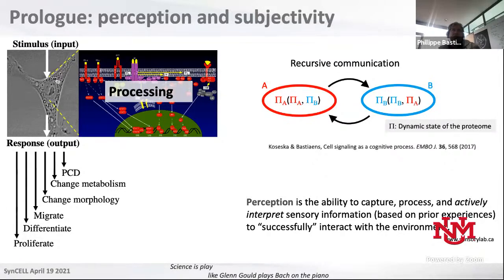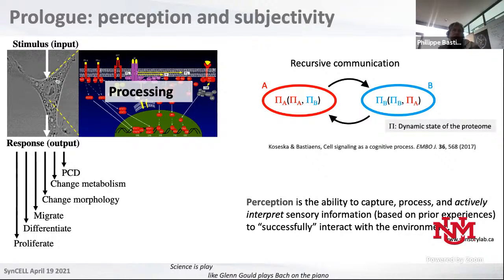I would like to give a different twist on that: the idea of recursive communication, where the system represents a perception of its inner world, its inner state, as well as the outside world, in a dynamic state of the proteome. It's about relationships between molecules, not so much about the things themselves. That perception or dynamic state is dependent on the history — its own state — as well as on the state of other entities it can recursively communicate with. Recursive communication means it's bidirectional.